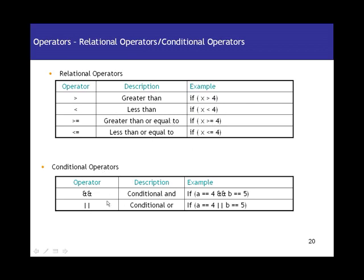Conditional operators operate on two conditions. For example, if a equals-equals 4 returns a boolean, and b equals-equals 5 also returns a boolean. With the AND operator, both conditions must be true to return true; if either is false it returns false. With the OR operator, it returns true if either condition is true, and returns false only if both conditions are false.